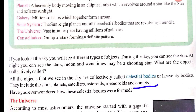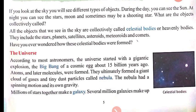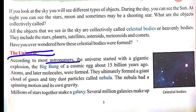Have you ever wondered how these celestial bodies were formed? Kya kabhi aapne socha hai, yeh saari aakashiya cheezein kaise bani hongi? For this, our next topic is: The Universe — Brahmand, meaning the entire world and cosmos. According to most astronomers — astronomers means khagol vigyan ke log, jo space mein jo cheezein payi jaati hain unki study karte hain.